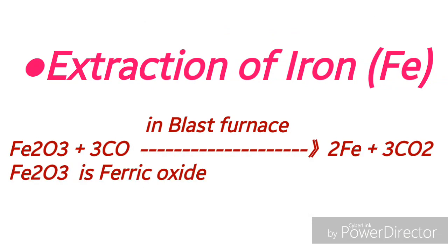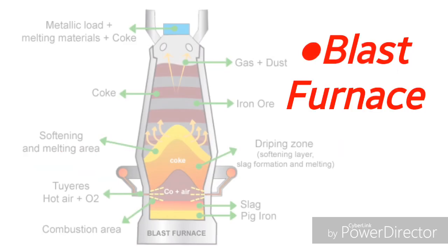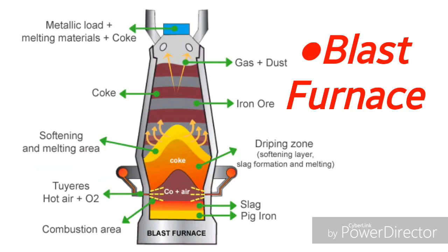Now let us see extraction of iron. Ferric oxide reacts with carbon monoxide in a blast furnace to form iron metal and carbon dioxide. Iron has two valences: plus two and plus three. Fe²⁺ is ferrous and Fe³⁺ is ferric. Here you can see the construction or structure of the blast furnace.